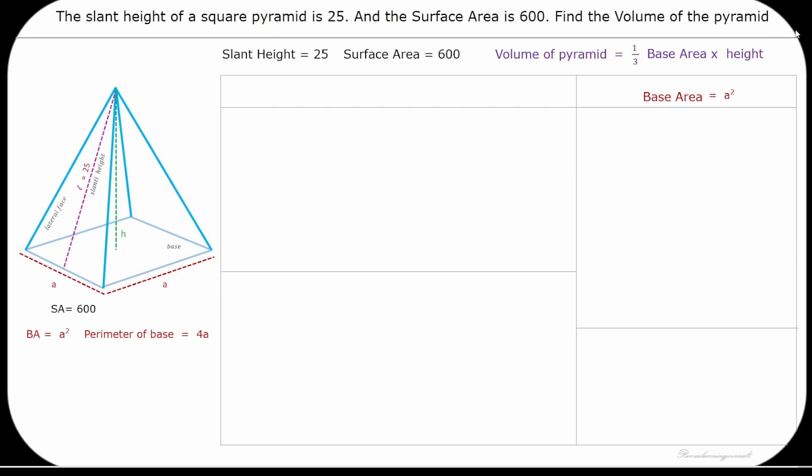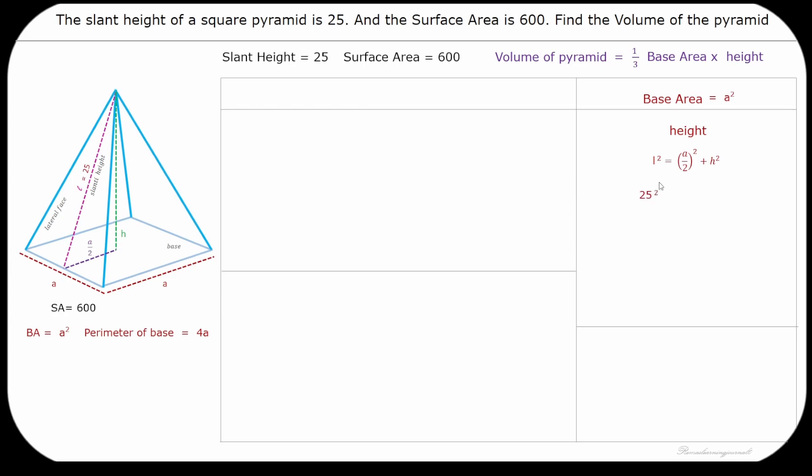Now let's see how to find the height of the pyramid. A right angle triangle is formed by the slant height L and half of the base length and height of the pyramid. So let's use the Pythagorean theorem to find the height of the pyramid. We know the value of slant height L and we need to find the base length A.